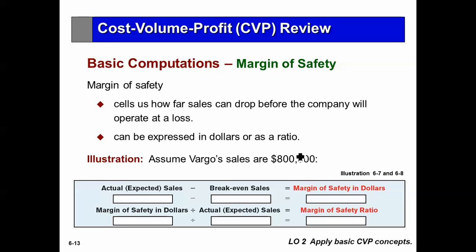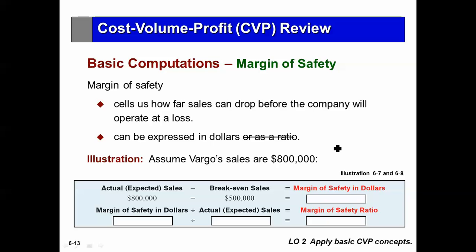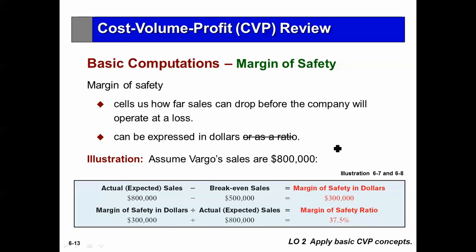As also talked about in the last chapter: the margin of safety. That tells us how far sales can drop from where they are now to the break-even point. Below break-even, a loss is incurred. This can be expressed in dollars or as a ratio. Assume Vargo sales are $800,000. The break-even in sales is $500,000. Therefore, the margin of safety is $300,000. If you want it as a ratio, you take that as a percentage, but we rarely use the margin of safety ratio — we basically look at the actual dollars.